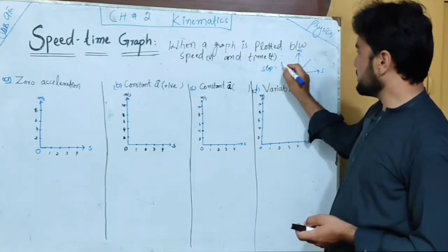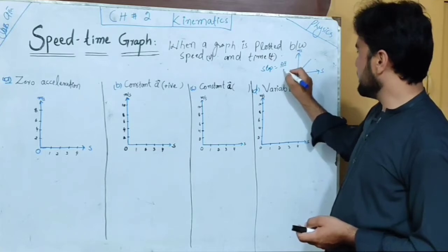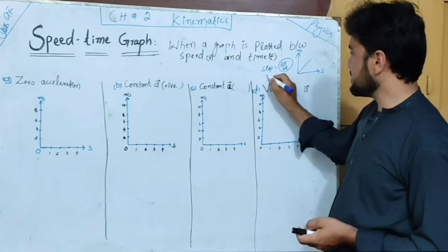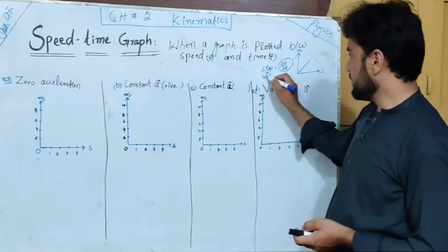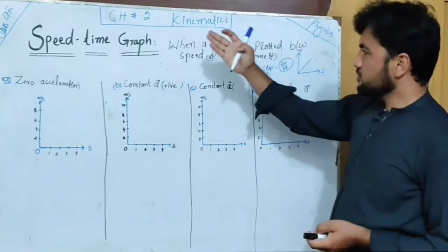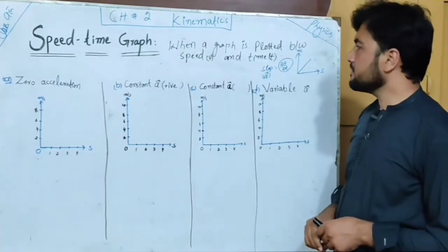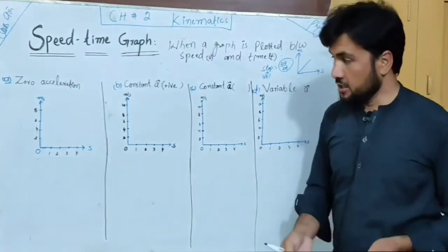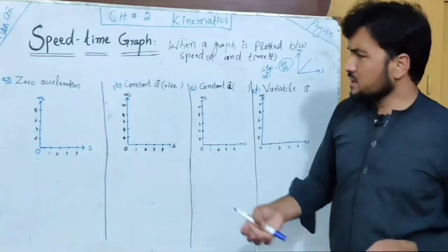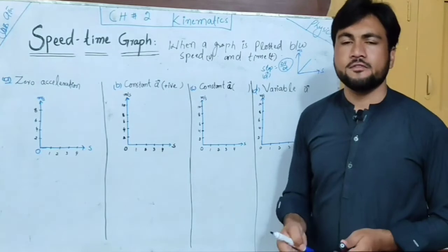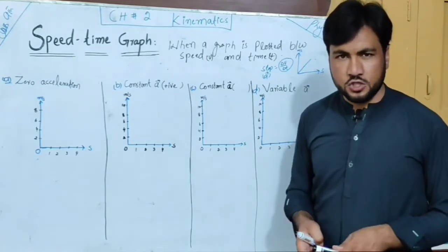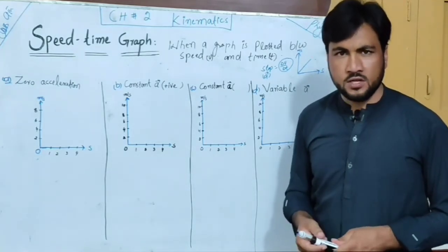The slope of the speed-time graph is delta V divided by delta T, and this slope shows us the acceleration. This means that from the speed-time graph, the slope gives us the acceleration. In different cases, there are different graphs that we will understand one by one conceptually.